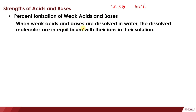When weak acids and bases are dissolved in water, the dissolved molecules are in equilibrium with their ions in solution. We are going to compute the concentration of ions with the help of our equilibrium constant and equilibrium expression. We're going back to our discussion about equilibrium to find out the concentration of the ions and the percent ionization of our weak acids and bases.